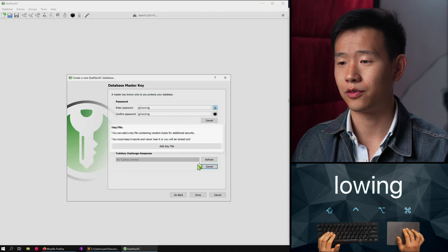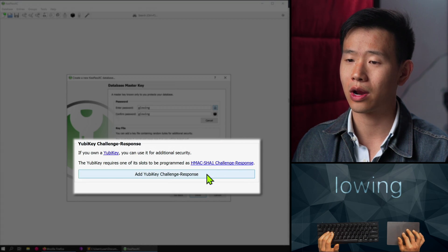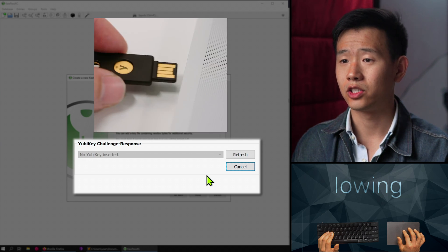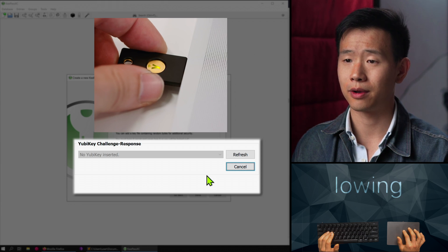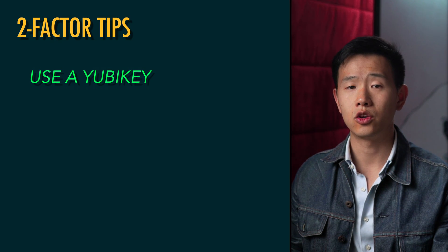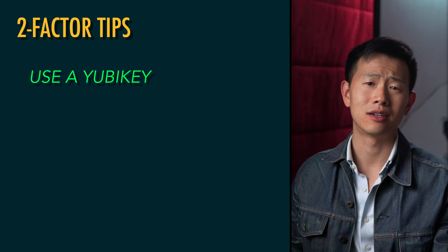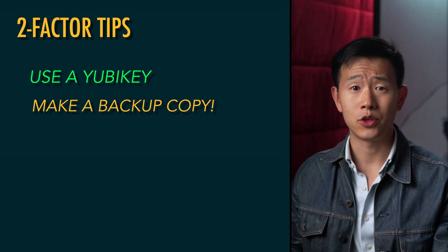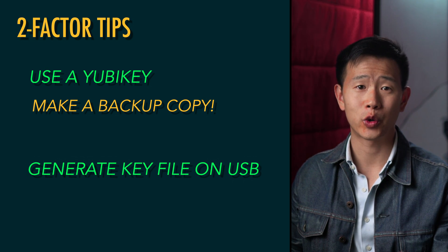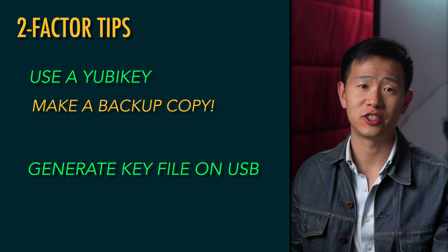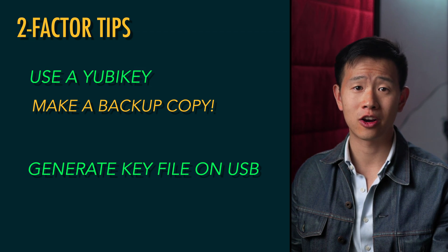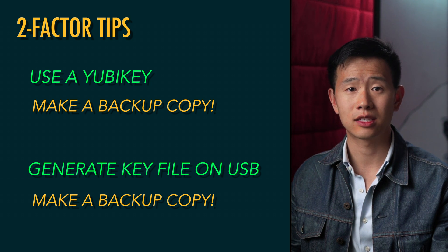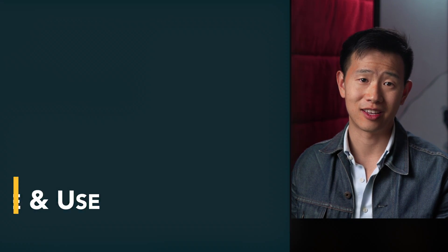There are also additional options of using a key file or YubiKey programmed in challenge-response mode as a second factor to decrypt your database. To do this, just plug it in and select the challenge-response slot. I recommend using a YubiKey if you have one, but remember to make a second copy in case you lose the first. If you don't have a YubiKey, you can also generate a key file to store on a USB stick. Don't store it on the same device as your database, since then it's no longer a two-factor. Backup the key file to another drive, since if it gets corrupted or deleted, you'll be locked out of your passwords for good.